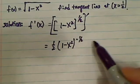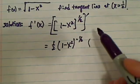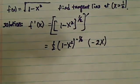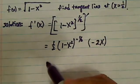becomes to the minus one-half. Then we take the derivative of the inside, which turns out to be minus 2x. So the derivative of minus x² is minus 2x.